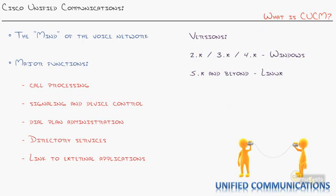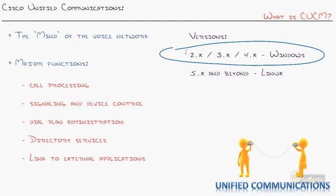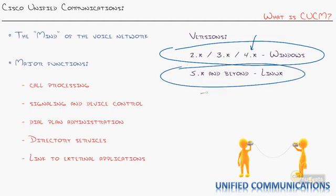CUCM has gone through many versions. When Cisco began with this product, all the initial versions ran on a Windows operating system — originally Windows NT, then Windows 2000, then Windows 2003. That was the 4.x era, and you'll still see it running out there because phone systems don't get replaced that often. From version 5.x and beyond — 6.x, 7.x, 8.x, 9.x — it moved to a Red Hat-based Linux appliance. But you don't need to care that it runs on Red Hat, because it installs from an image and you never actually see the Red Hat operating system. It's all hidden behind the scenes.